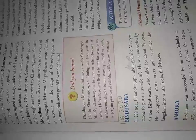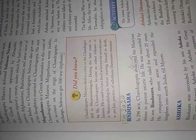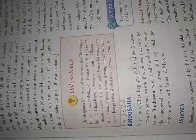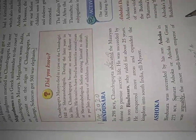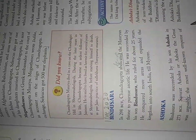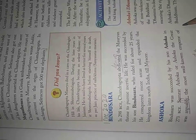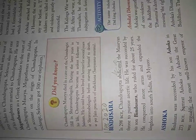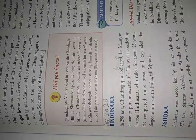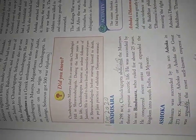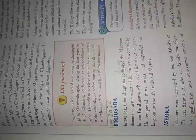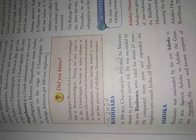Next is Ashoka. Bindusara was succeeded by his son Ashoka in 273. You have all heard about Ashoka the Great, Samrat Ashoka — very famous. Whatever our national emblem is, with the four lions, we got that from the Ashoka pillars.